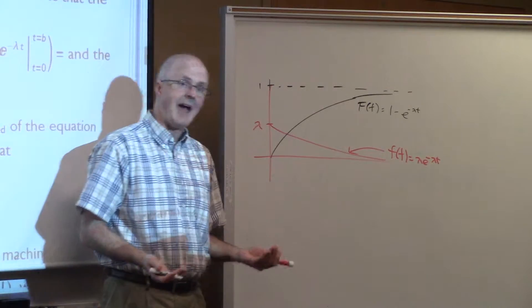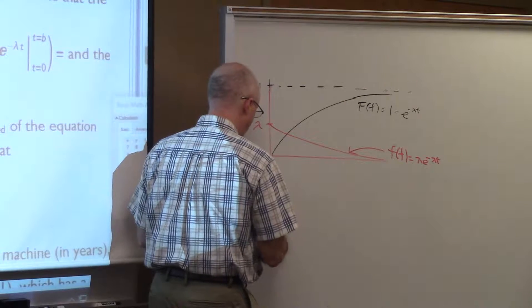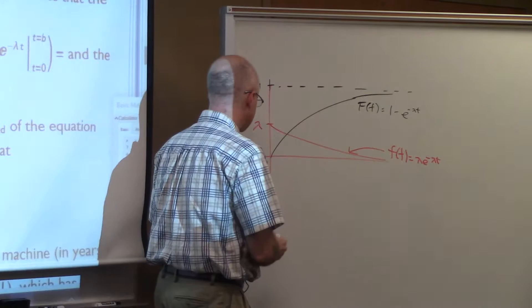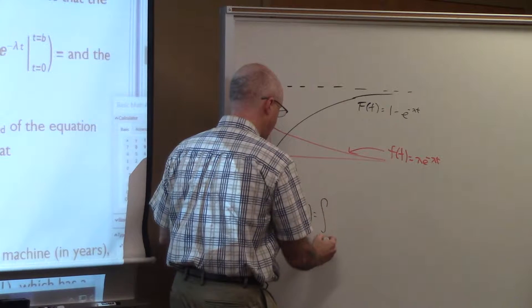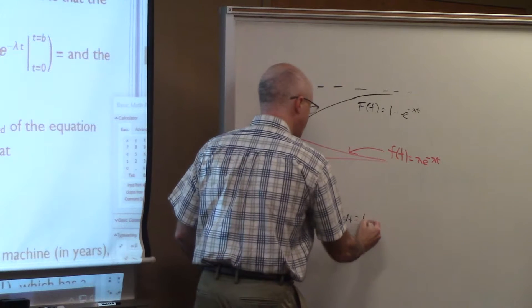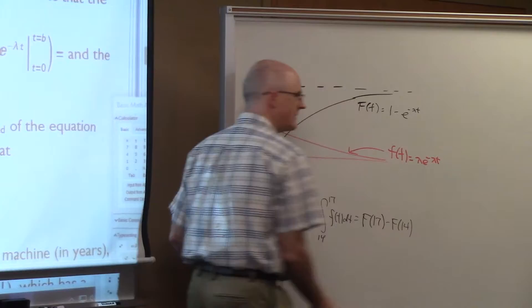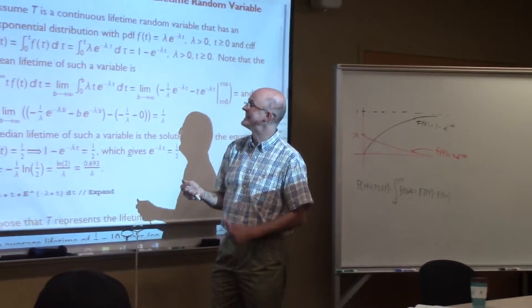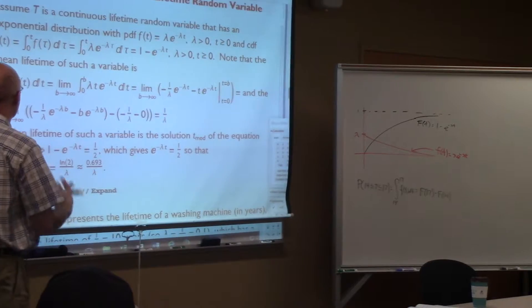You calculate differences of that to find probabilities. So, for example, if you want to find the probability that the washing machine lasts between 14 and 17 years, you integrate the PDF. But that means you calculate the difference of the CDF. Capital F of 17 minus capital F of 14. So, if you've got a formula for the CDF, you don't have to do an integral anymore. You can just use this formula as is to find the probability. That's probabilities with respect to the lifetime.